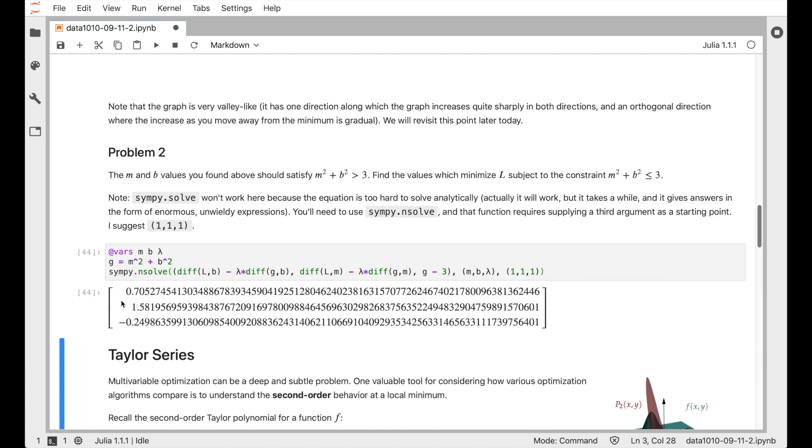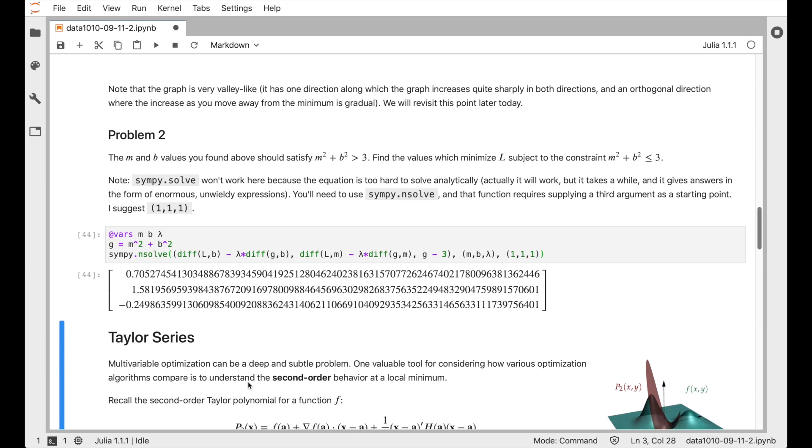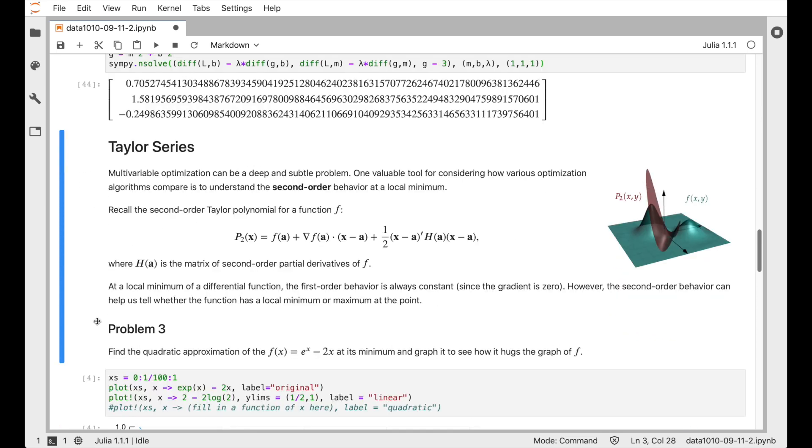And we see our values have changed a little bit. So our slope has changed to 0.7 and our intercept has changed to 1.58. So that was the concession that was made to get m squared plus b squared down to 3 while still trying to fit the points as well as possible. All right.